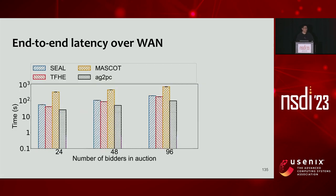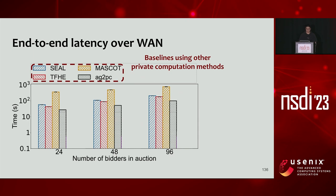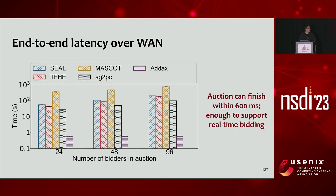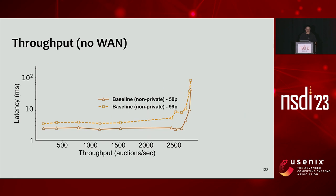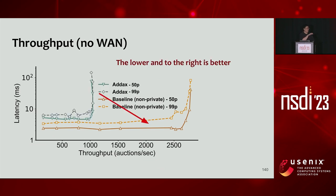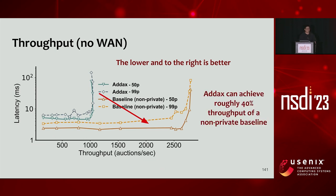For evaluation, the first metric is end-to-end latency over a wide-area network where bidders and auction servers are split across different regions. We built baselines using other private computation methods. ADX finishes the auction within 600 milliseconds, sufficient for real-time bidding, while other baselines take more than 10 or 100 seconds. We also compare throughput against a non-private baseline that provides no privacy or verifiability — lower to the right in the figure means higher throughput. ADX achieves roughly 40% of the throughput of the non-private baseline.